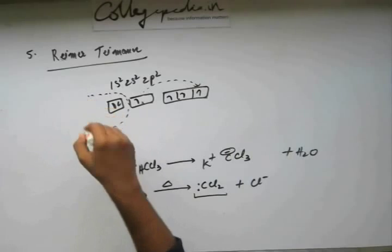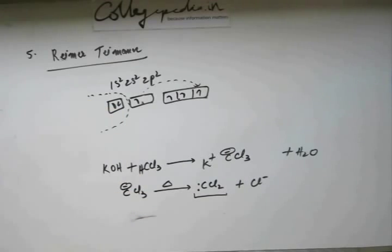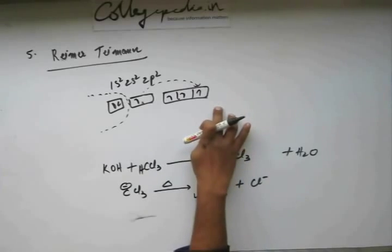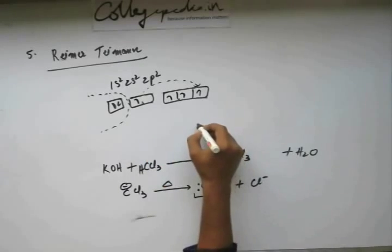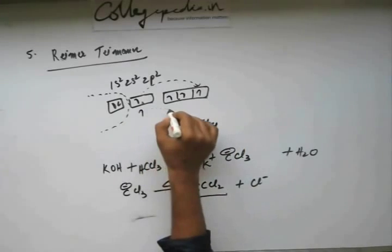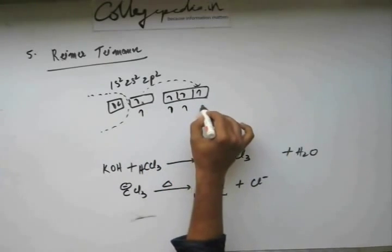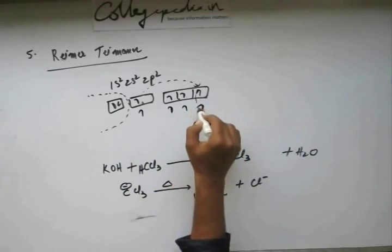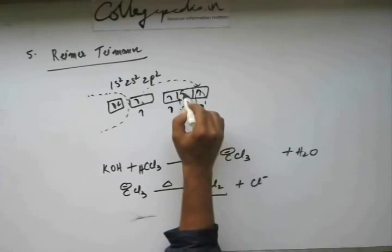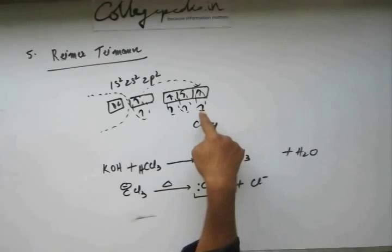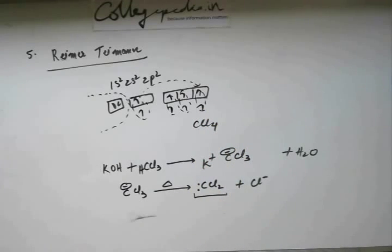So 1s will not participate in bonding, so we don't have to consider this. Now there are 4 unpaired electrons and in CCl4, suppose you have carbon tetrachloride, then there will be 4 unpaired electrons of chlorine coming to each orbital and there will be bonding. This forms 1 bond, this forms 2nd bond, 3rd and this forms 4th bond. So now carbon has 8 electrons in its outermost shell, right.